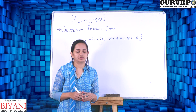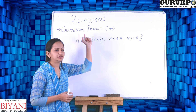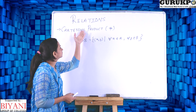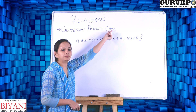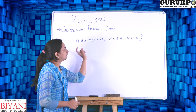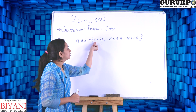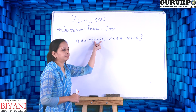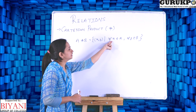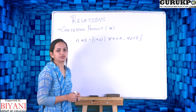Before starting relations, we have to understand what is Cartesian product. It is a type of operation on sets. Cartesian product is denoted by the asterisk symbol. The definition says that if there are two sets, set A and set B, then Cartesian product is a set of pairs in which in each pair the first element is from set A and the second element is from set B.